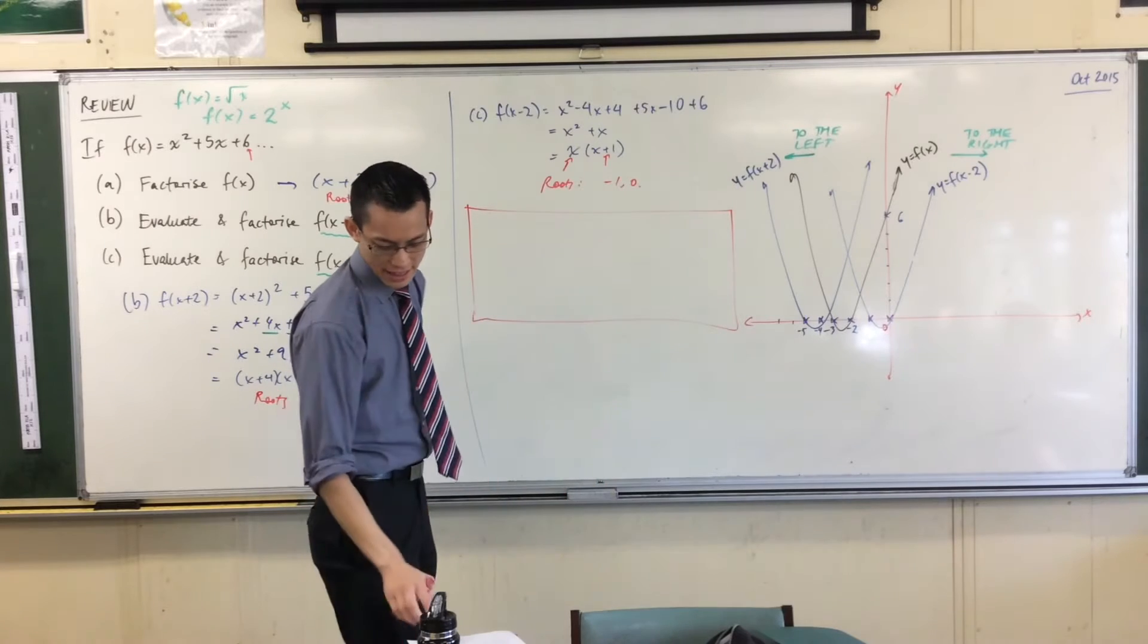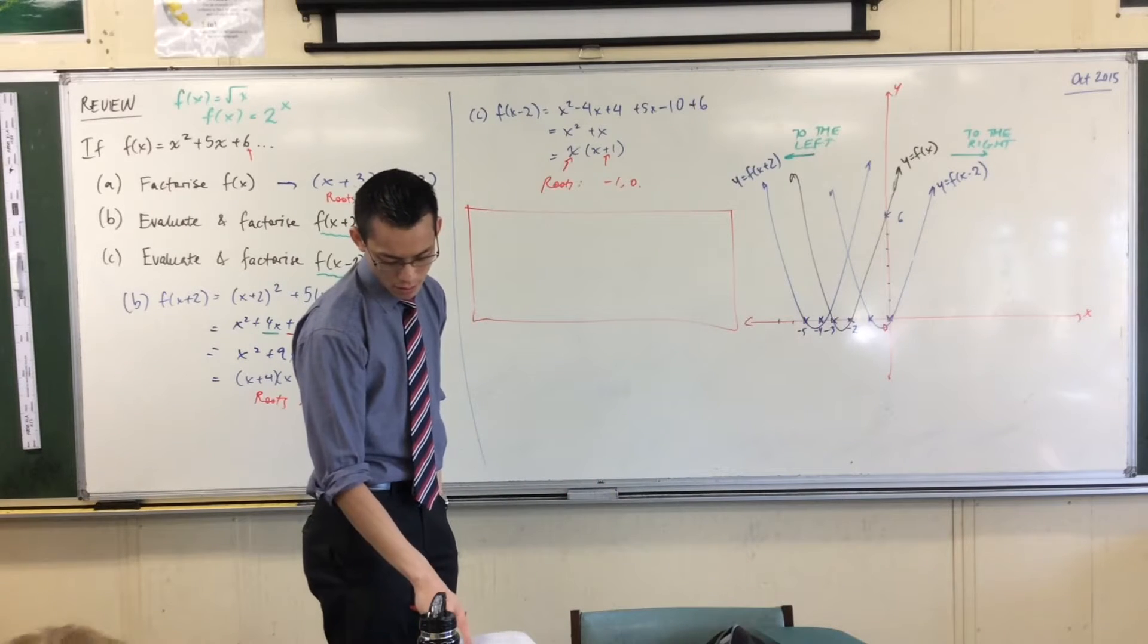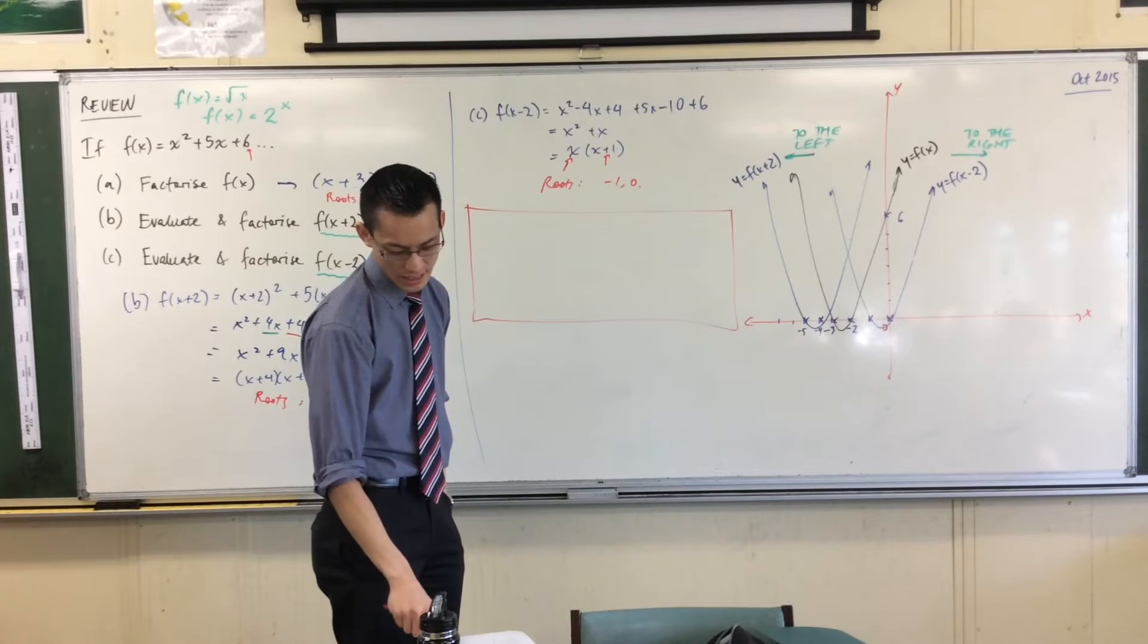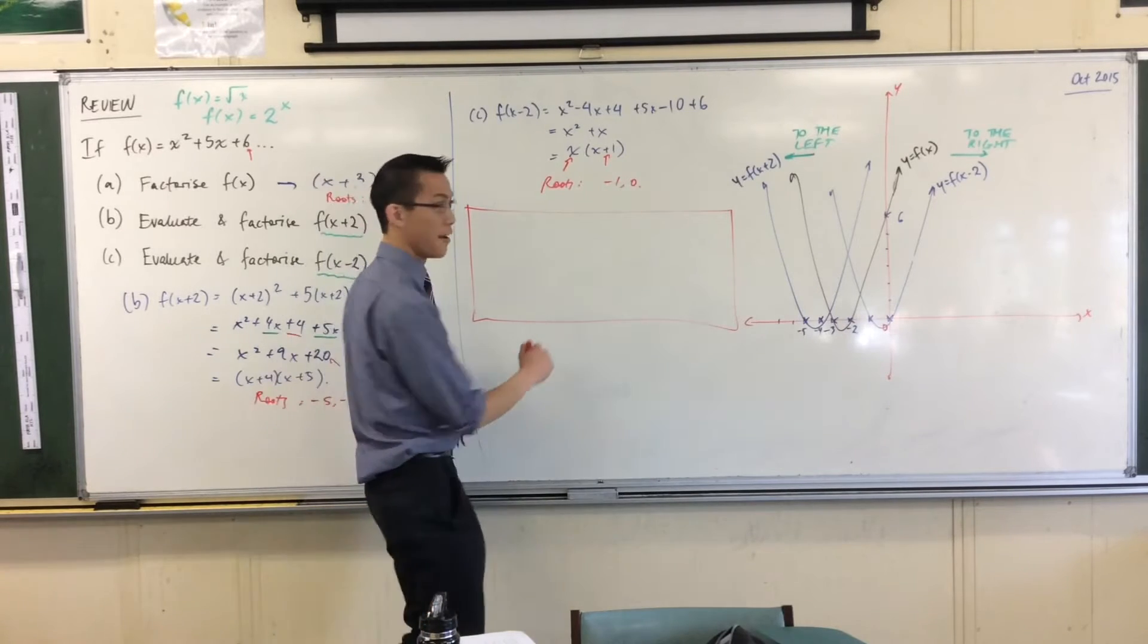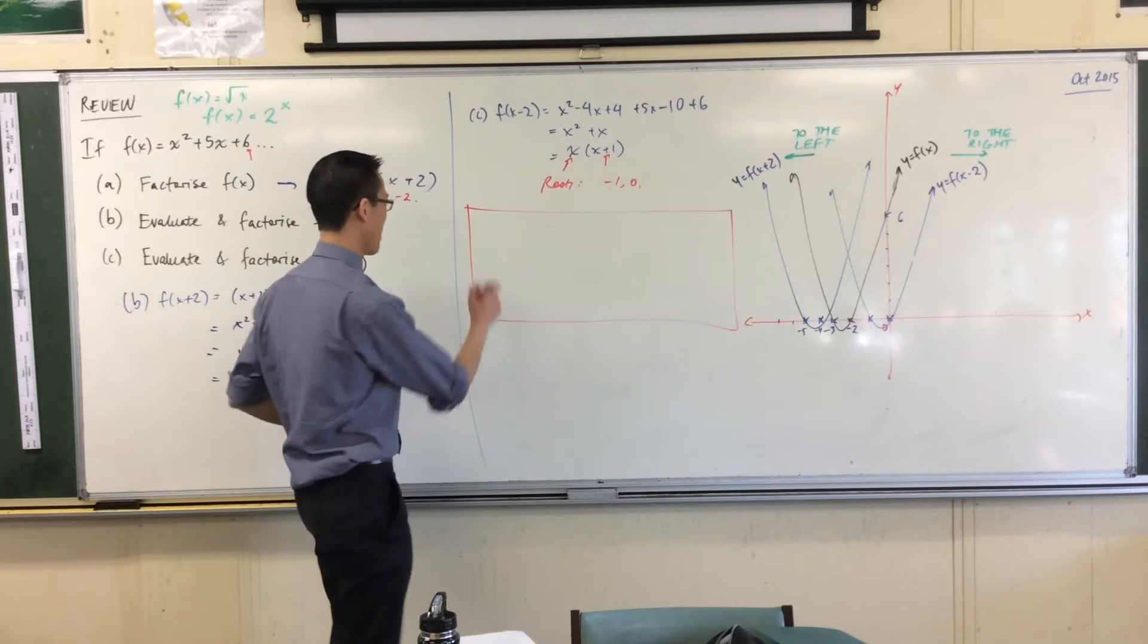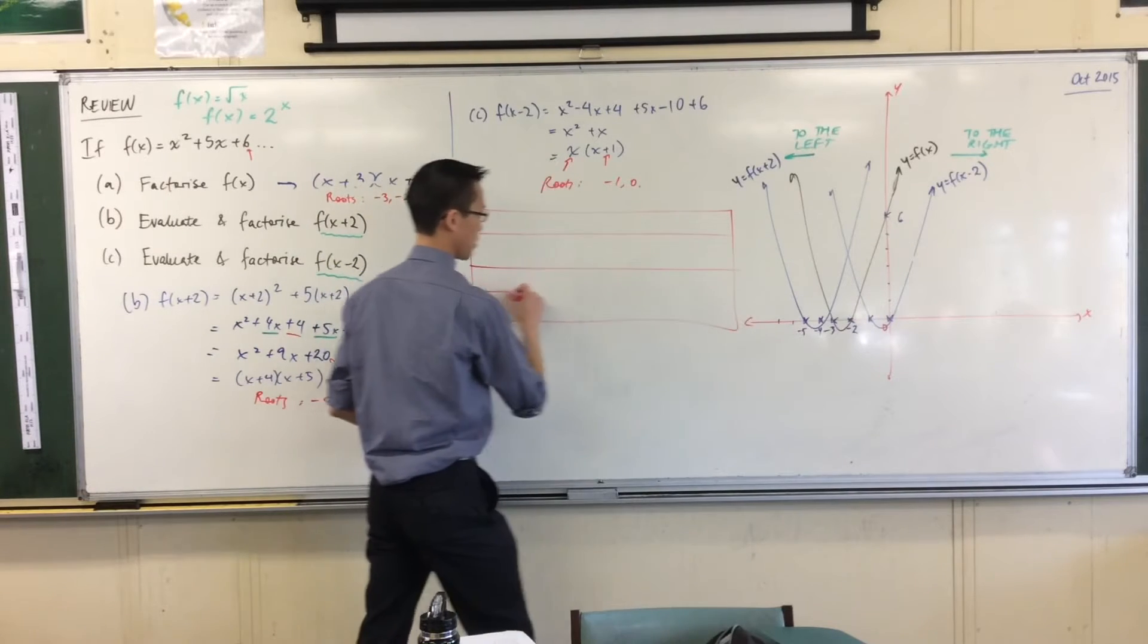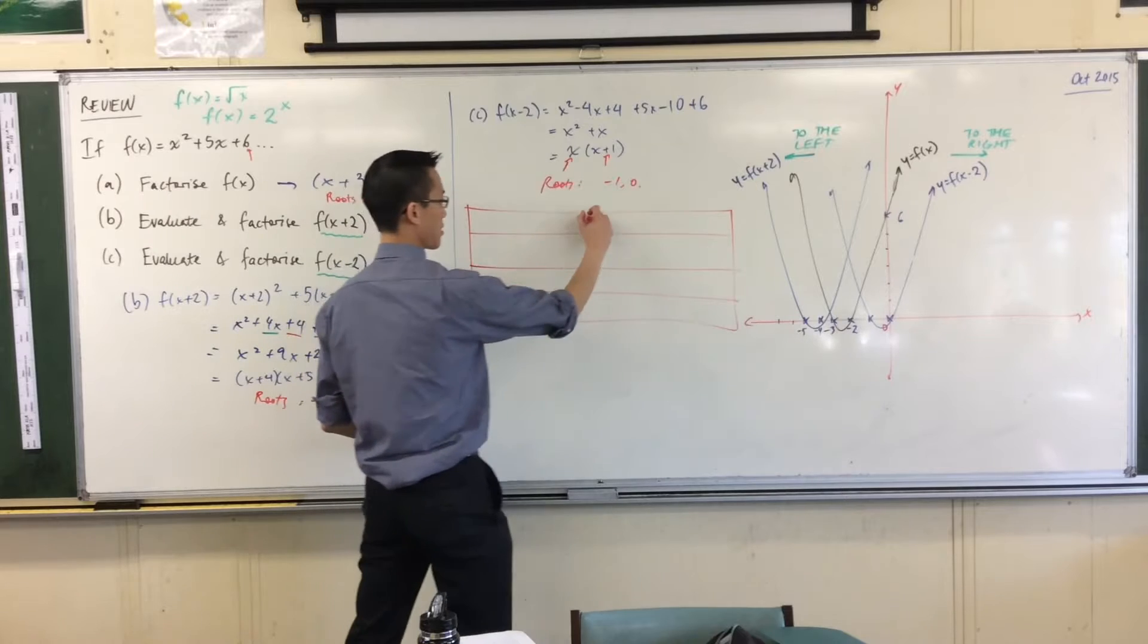You're gonna need four rows on it and I think if we do one, two, three, four, five, six, seven, eight columns, that should hopefully be enough to convince us. Okay, so we're going to go four rows and eight columns.